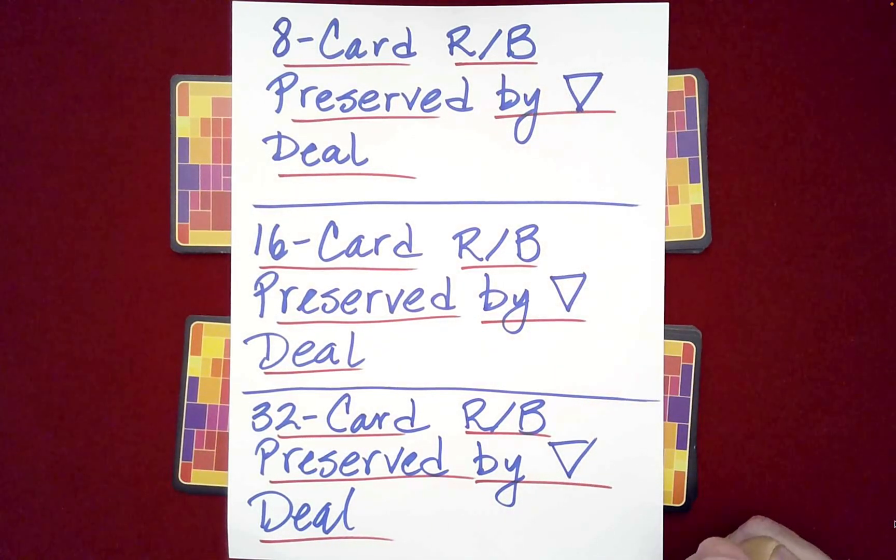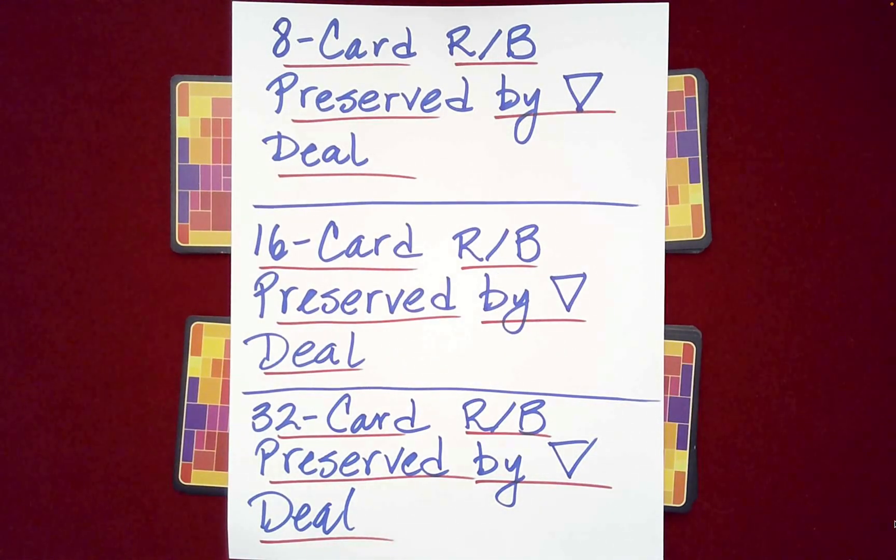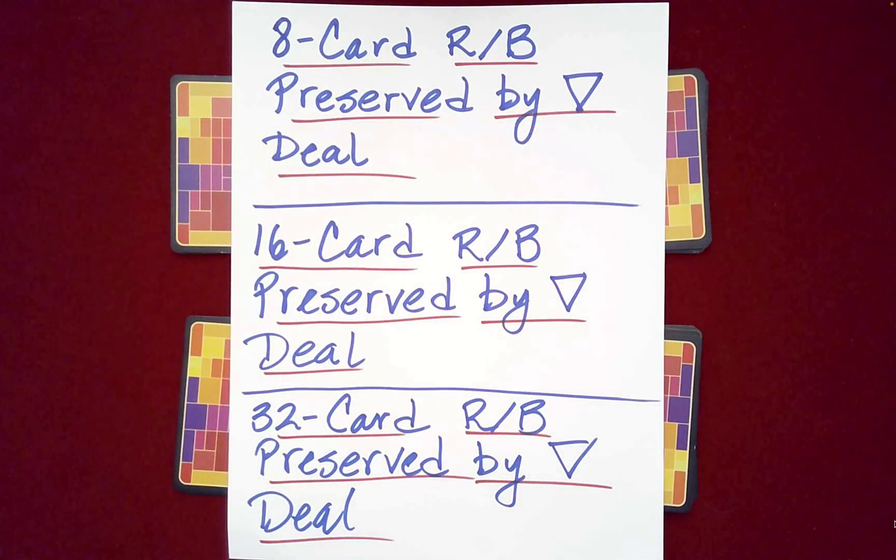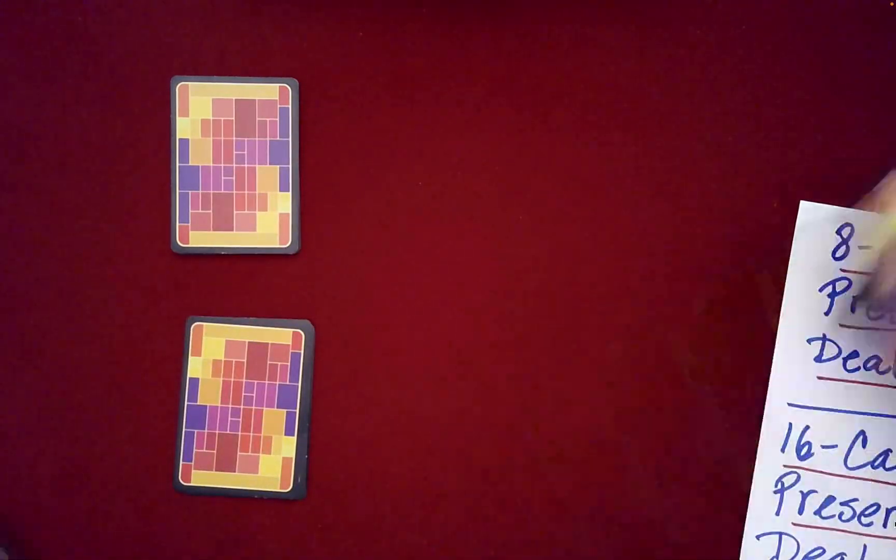Okay, so what I'm pointing out here is that this triangle deal, it will preserve alternating structures in all three of these cases, and all, you know, when you have powers of two cards. Okay, now the only caveat, you're dealing them out into a triangle like this, right? And when I said, in fact, let's just mimic that right now.